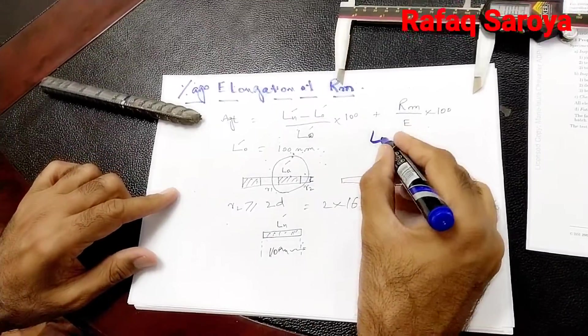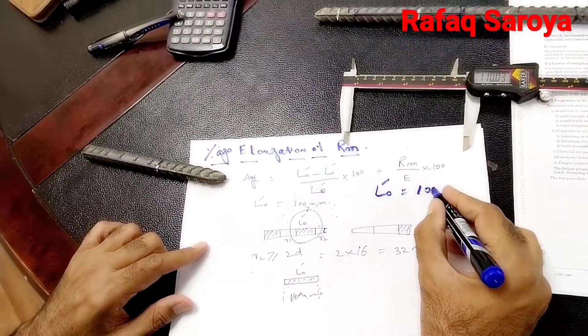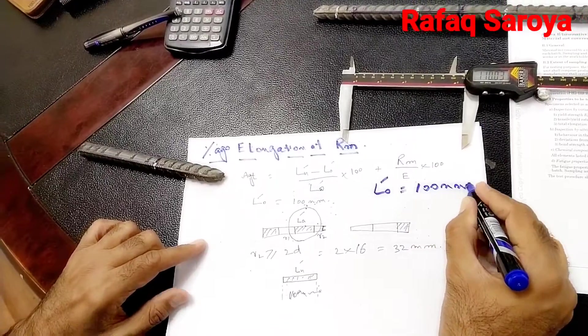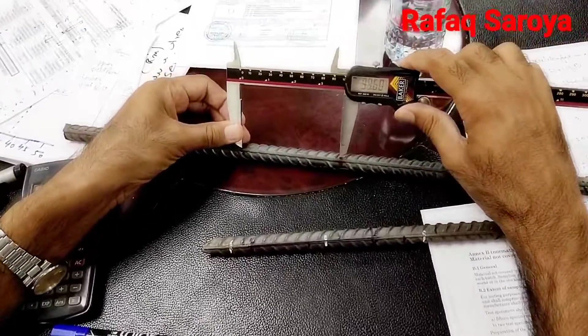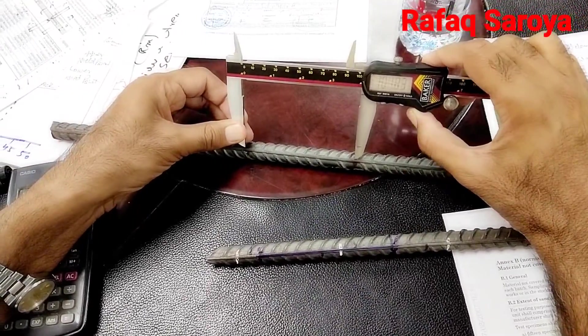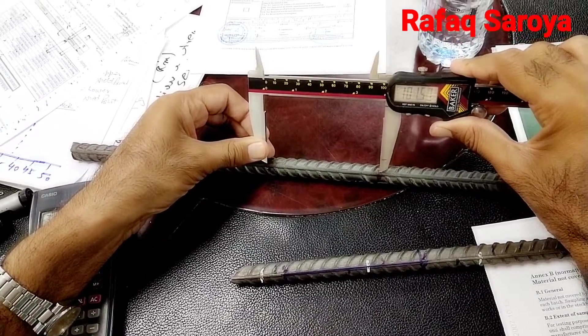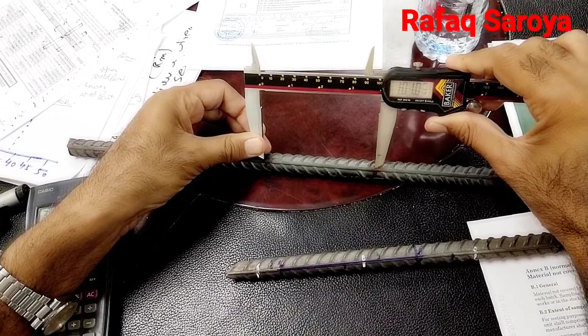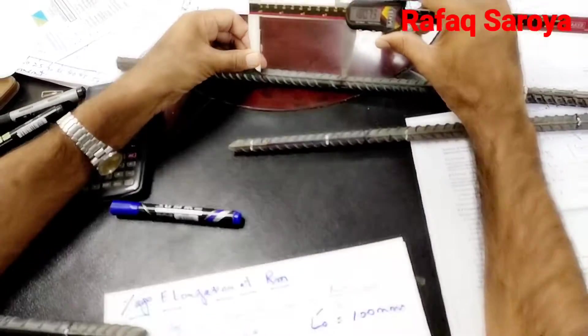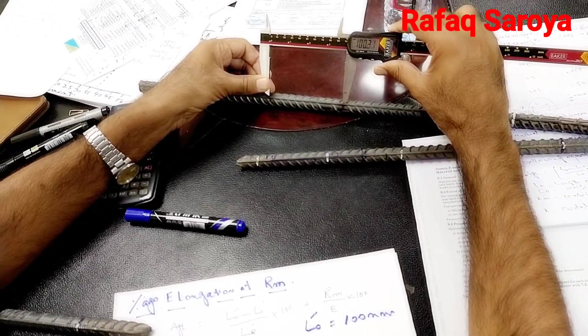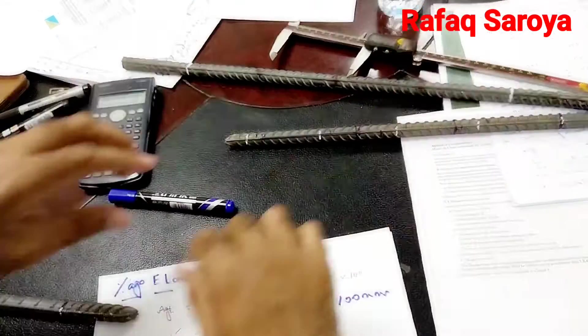Now L0' is equal to 100 mm, which I can show you over here before the fracture. You see this is the length, 100 mm.